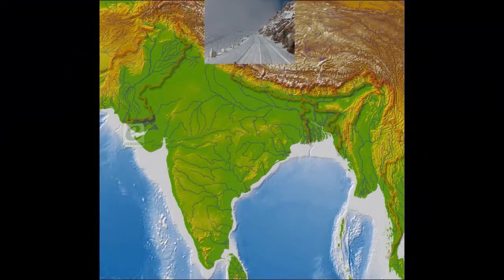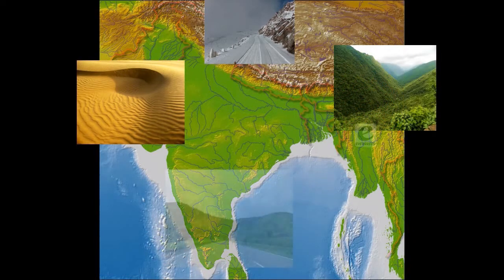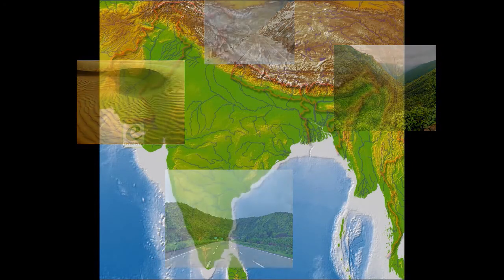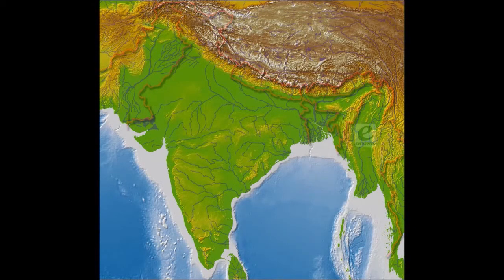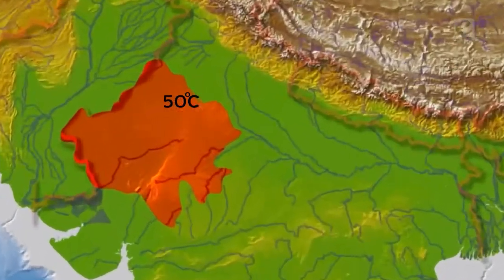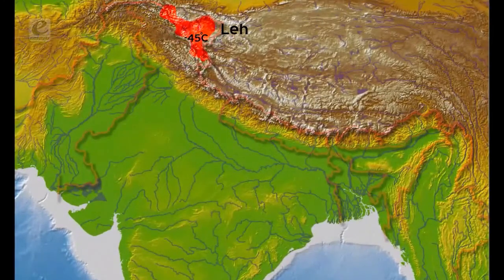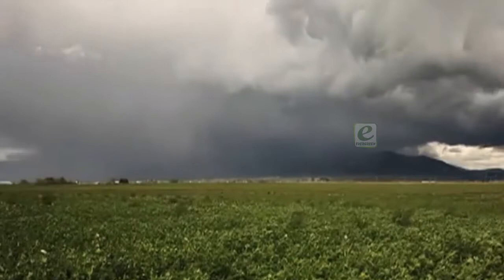Despite an overall unity and commonality in the general pattern, there are considerable regional variations in climatic conditions within the country. The temperature touches as high as 50 degrees centigrade in the western deserts during summer, whereas it drops as low as minus 45 degrees centigrade in Leh during winter. Variations are noticeable not only in the type of precipitation but also in its amount.